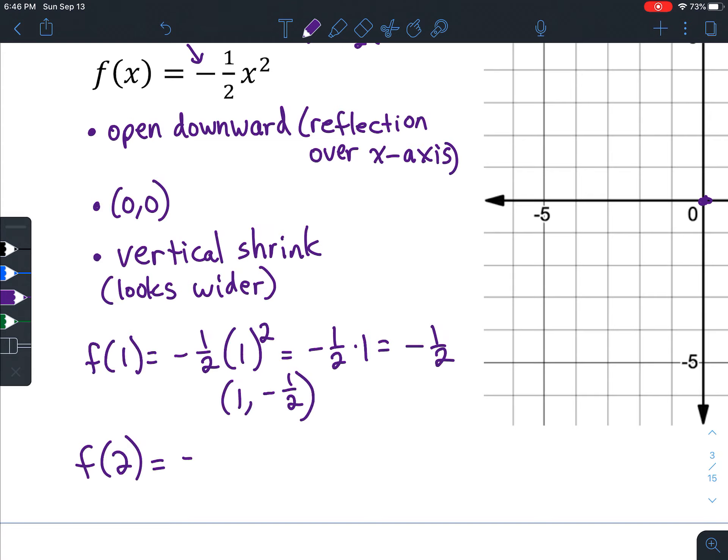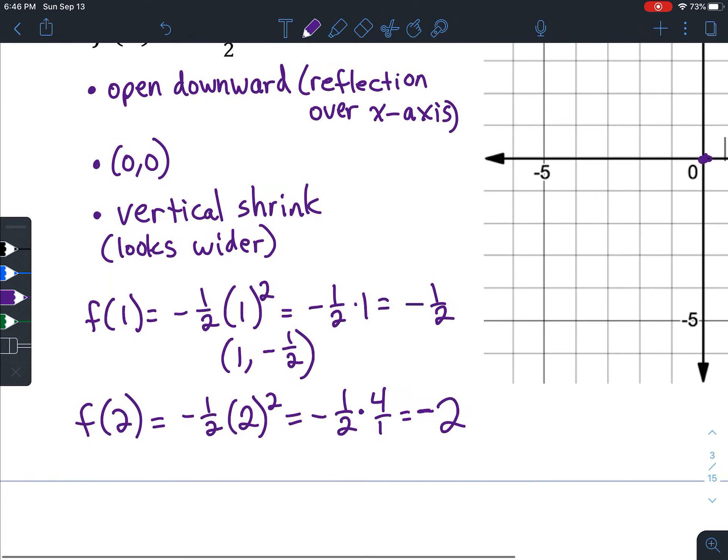And then for our second point, -½ times 2². You always square before you multiply by the other number, so you do exponents first in order of operations. -½ times 4. Think of that as 4 over 1. And you end up with ½ of 4 is just 2, and negative times a positive is negative. If you're having any trouble at all, use your calculator. So we've got our input of 2, output of -2.